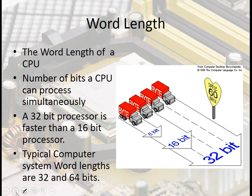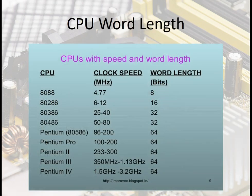Next is word length — the number of bits a CPU can process simultaneously. A 32-bit processor is faster than a 16-bit processor because you're processing 32 bits simultaneously. Typically a computer system word will be 32 or 64 bits, and a PC is typically 64 bits.